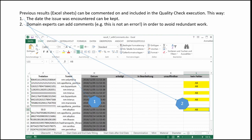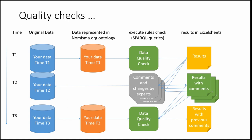The point is: no matter how automated the whole thing is, you need domain experts to run through it and say 'okay, it looks wrong but actually it's right — it's an acceptable exception.' The idea is that you run through this system several times. You start with the data, check it against the ontology or type series catalog on the web, run the quality check, get results in the Excel spreadsheet, and the spreadsheet goes to the domain expert who either confirms it's okay or changes the data and goes back to the database to start again.